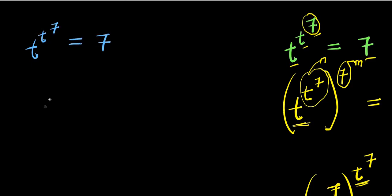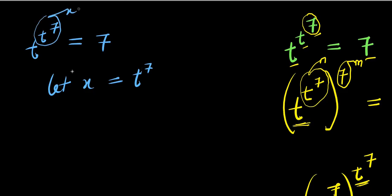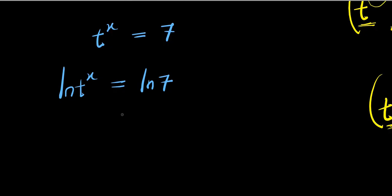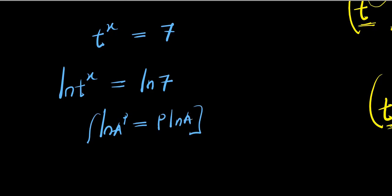I start by letting x equal t to the power of seven. So t^(t^7) becomes t to the power of x, which equals seven. I can then apply the natural log to both sides: natural log of t^x equals natural log of seven. From the logarithm property, the natural log of a to the power of b equals b times the natural log of a. So this gives x times the natural log of t equals the natural log of seven.